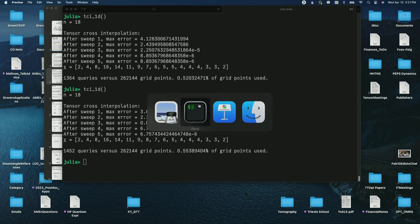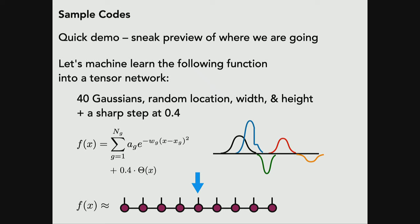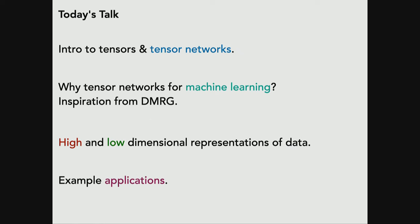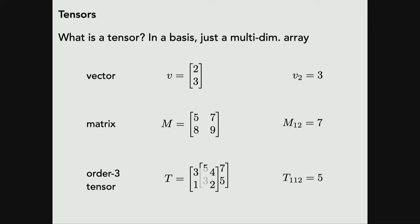That's just a quick demo of what some of these algorithms can do, to give you a feel for their power. Let's start at the beginning about tensors and tensor networks, and why I think tensor networks have some promise for machine learning. Today I'll use the inspiration of the DMRG algorithm, and I'll end today by discussing two contrasting ways to represent data as tensors — one I'm calling high-dimensional, one low-dimensional — plus some example applications and a setup for tomorrow.